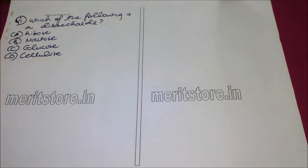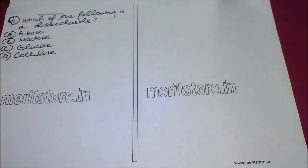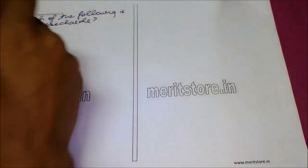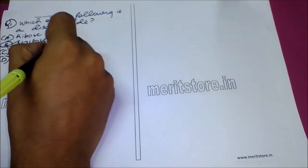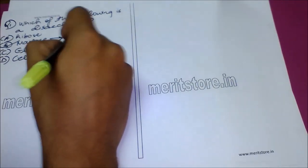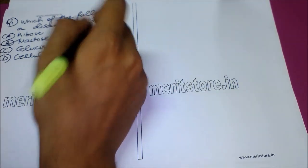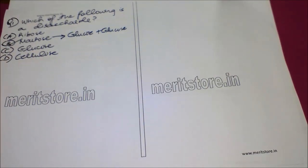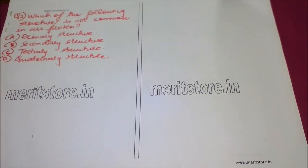Our first question is: which of the following is a disaccharide? Option A: ribose, Option B: maltose, Option C: glucose, and Option D: cellulose. A disaccharide is a carbohydrate formed by the combination of two monosaccharides. The answer is Option B, because maltose is formed by the combination of two glucose units.